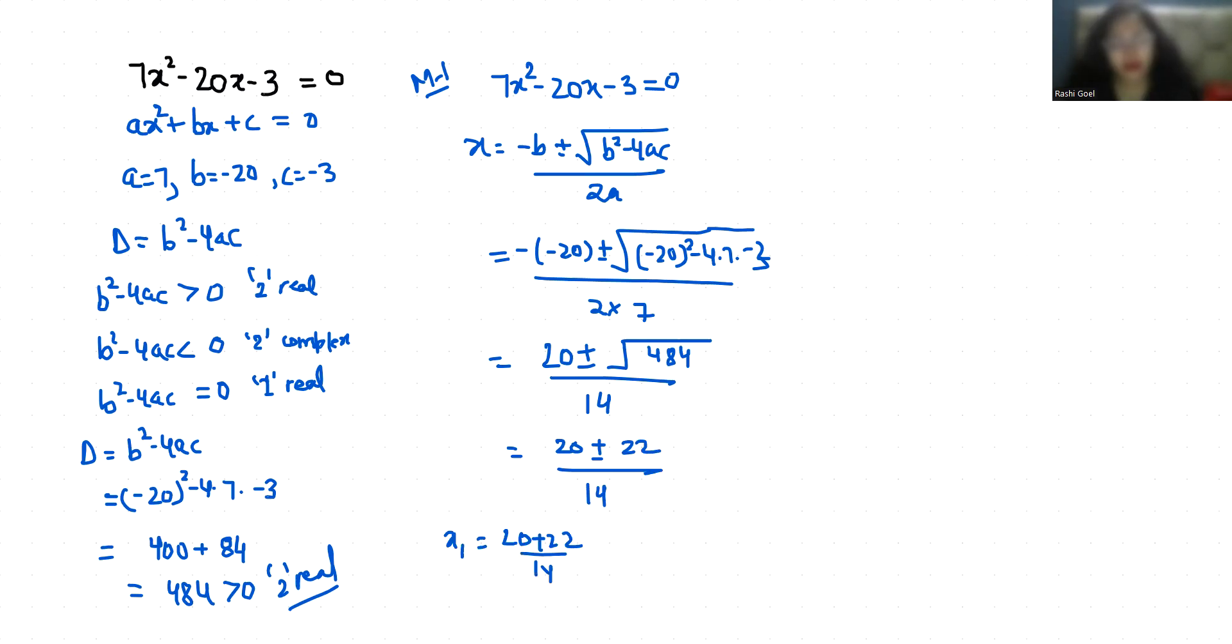x1 is 20 plus 22 by 14, and x2 is 20 minus 22 by 14. So x1 is 42 by 14, which equals 3, and x2 is minus 2 by 14, that is minus 1 by 7. These are the two values of the two roots of x.